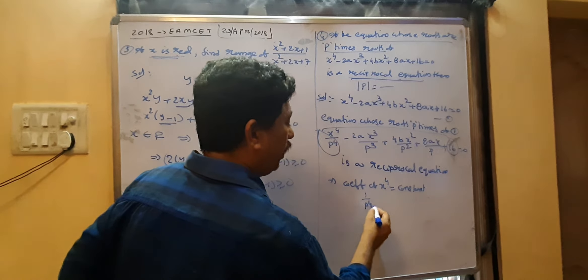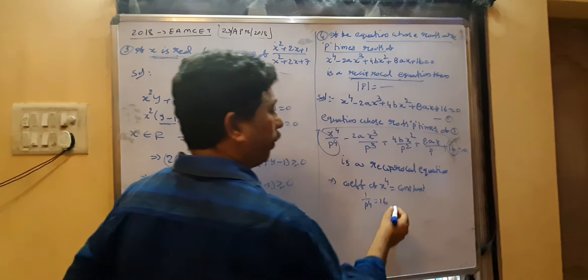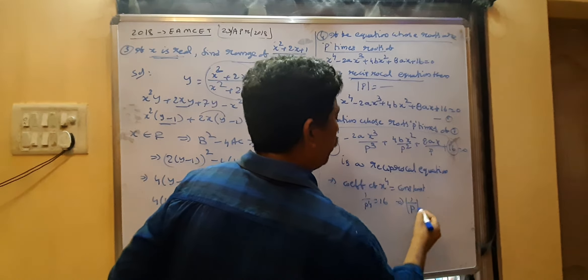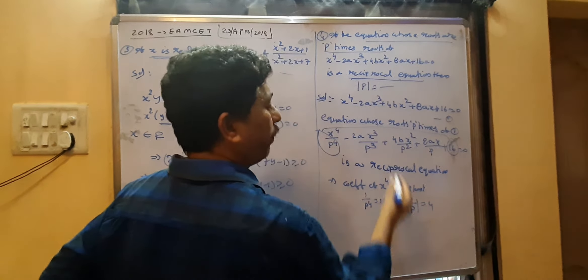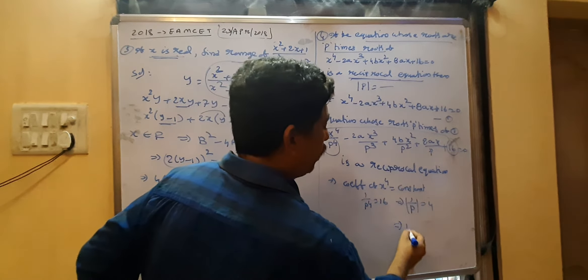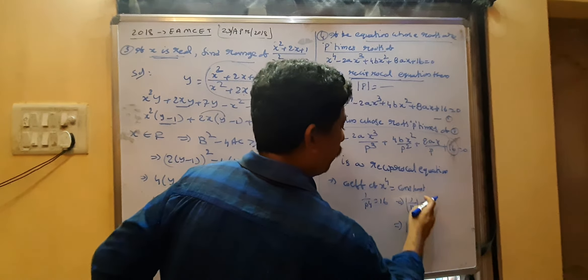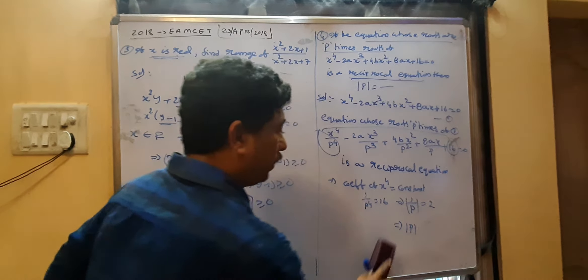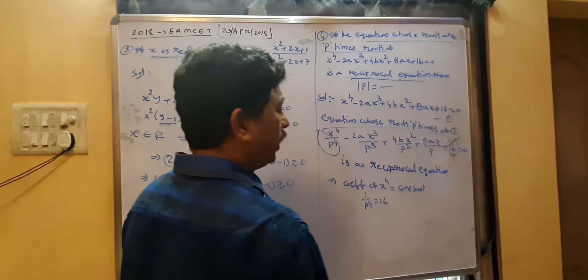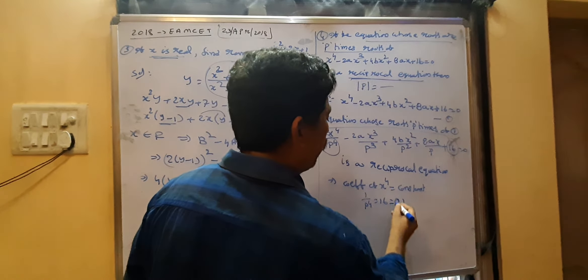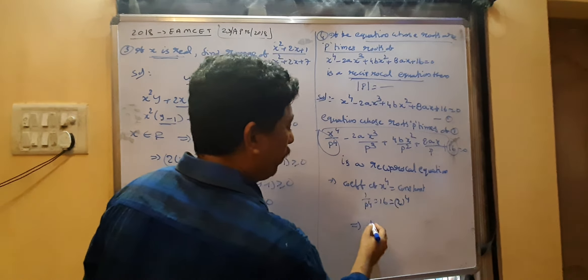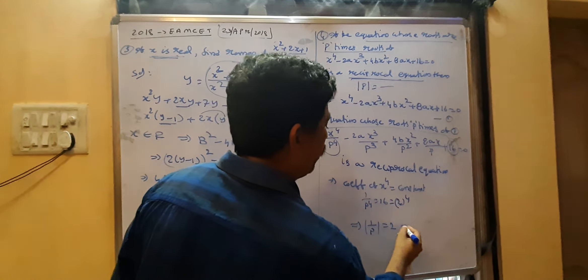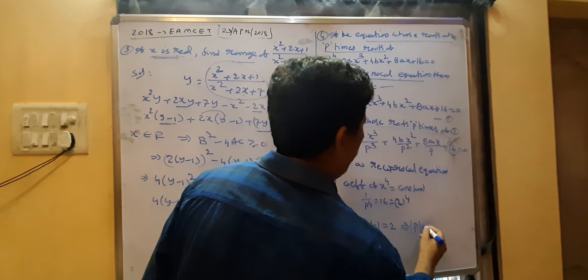So 1/p⁴ = 16, which implies |1/p| = 2, since 16 is 2⁴. Taking the reciprocal, |p| = 1/2. This is the value of p.